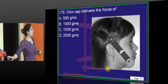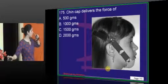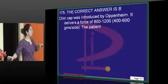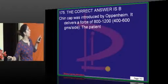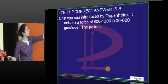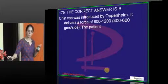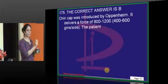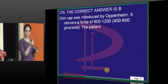Chin cap delivers a force in the range of 800 to 1200 grams total, with an average of 1000 grams. Per side, it is 400 to 600 grams. Sometimes exam questions ask for the force in ounces, so you need to know the conversion between SI, CGS, and ounce-to-gram units.